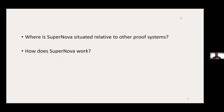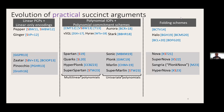The rest of this talk is organized around two questions: where is SuperNOVA situated relative to other proof systems, and how does SuperNOVA itself work? To answer the first question, I created a framework depicting all works in the literature, going back to the first succinct argument implemented, called PEPPER. I've organized this as an evolution of practical succinct arguments in three stages, with works in each stage in chronological order, top to bottom.